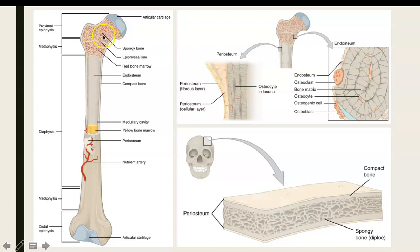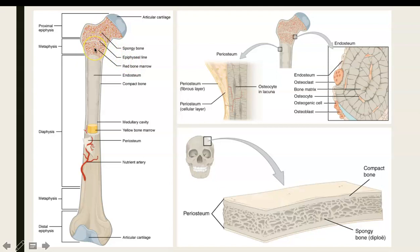Both the epiphysis and the metaphysis are filled with a spongy bone and filled with what is referred to as red bone marrow. The red bone marrow is where you get blood cell production. I'll have a little bit more to say about that later.